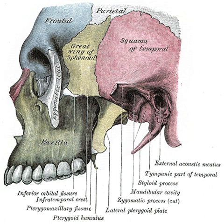The infratemporal space, also termed the infratemporal portion of the deep temporal space, is a fascial space of the head and neck, sometimes also termed fascial spaces or tissue spaces. It is a potential space in the side of the head and is paired on either side. It is located posterior to the maxilla.